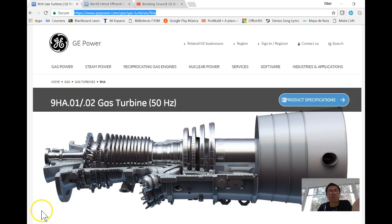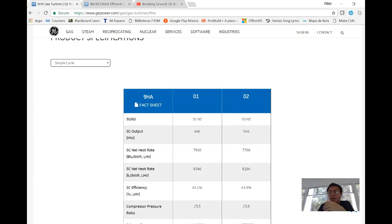If I visit any supplier, in this case I choose GE, and I look for this turbine which is a gas turbine for producing electricity at 50 Hertz, I can see that I can go to product specs.